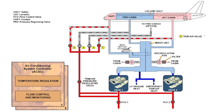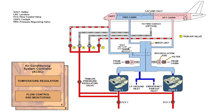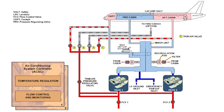We'll have a look at the basic cooling part first. After the flow control valve, a part of air goes through pack one and then to the mixer unit. The mixer unit has several inlets: one from air conditioning packs one and two, one from the ground LP inlet, another from the emergency ram air, and another from the cabin fans. There are two cabin fans in the system.